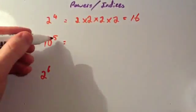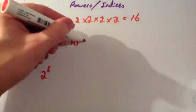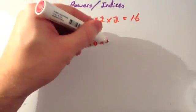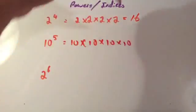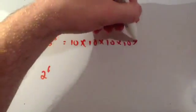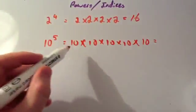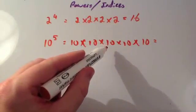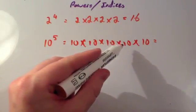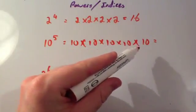10 to the power of 5 means 10 times 10 times 10 times 10 times 10. 10 times 10 is 100, times 10 is 1,000, times 10 is 10,000, times 10 is 100,000.